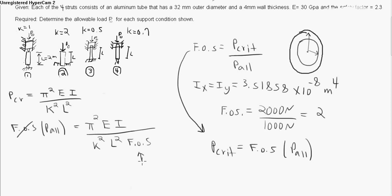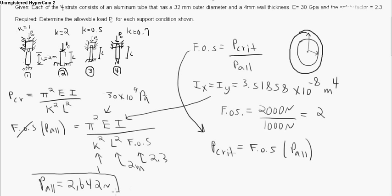So our factor of safety was 2.3, our length was 2 meters, our k is 1, our E is 30 times 10 to the 9th Pascals, and our I is 3.51 times 10 to the negative 8th meters to the 4th. And this will give us our allowable force, our centric force for this first column. And that turns out to be 2,642 newtons for condition 1.